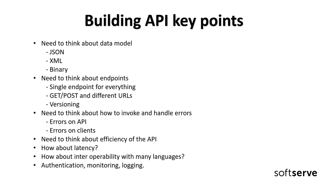Let's see what are the key points when building an API. Building an API is not very easy and we need to think about a lot of things. We need to think about the data model — will it be JSON, XML, or binary format? We need to think about endpoints: a single endpoint for everything like GraphQL, or different URLs for GET and POST like HTTP APIs. We also need to think about batching, how we handle errors, efficiency, latency, and what we should do when we have many programming languages.